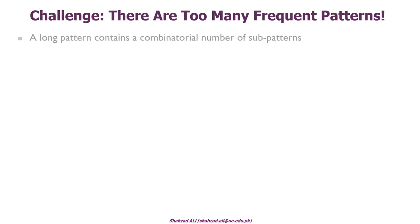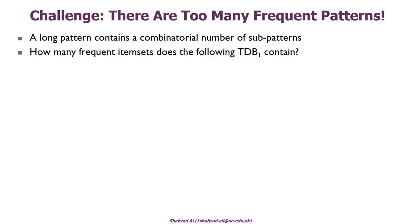In association rule mining or frequent pattern mining, there is one big challenge: in many cases we may generate too many frequent patterns. Usually a long pattern will contain a combinatorial number of sub-patterns. To give a simple example, suppose you have a transaction database TDB1 which contains two transactions T1 and T2. T1 contains 50 items: A1, A2, A3 up to A50.